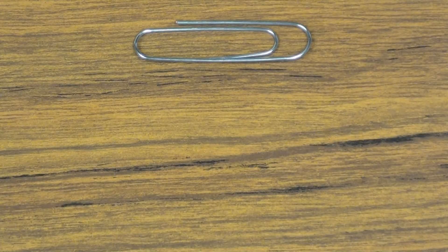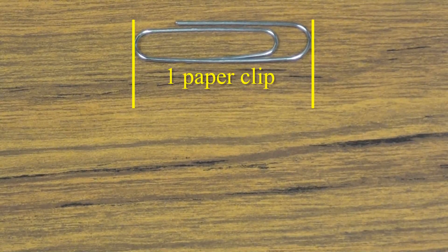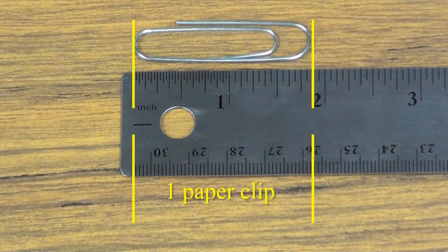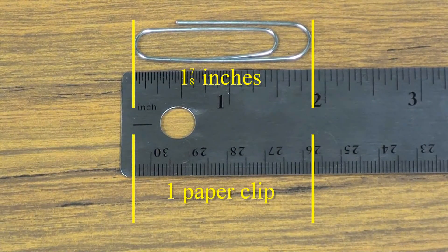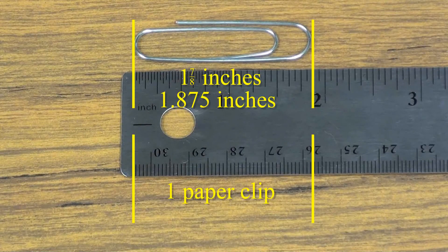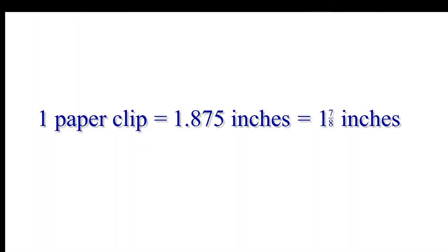We can easily compare units that measure the same type of thing, like length. Doing an experiment, we observe that one paper clip is equal to 1 and 7 eighths inches, or 1.875 inches. So the same length can be thought of in two equal ways. One paper clip equals 1.875 inches.